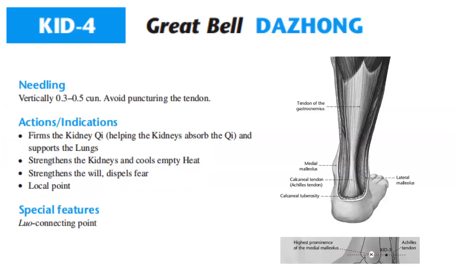Kidney 4 is needled vertically 0.3 to 0.5 cun. Avoid puncturing the tendons. For its actions and indications, Kidney 4 helps the kidney absorb the Qi and supports the lungs. It strengthens the kidneys and pulls empty heat. It strengthens the will and dispels fear. It is also a local point. For its special feature, Kidney 4 is a Luo-connecting point.